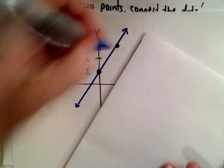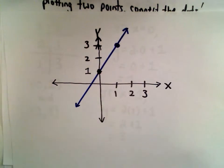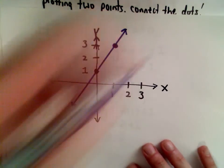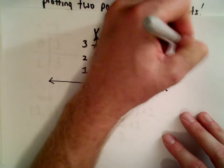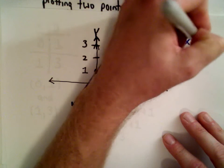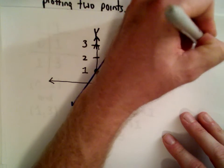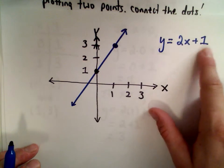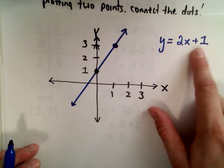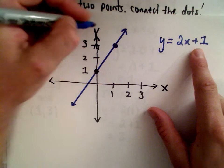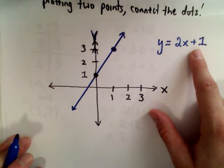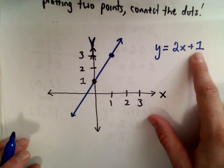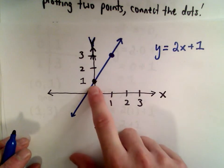Just to remind you about slope-intercept form that I mentioned at the beginning: the y-intercept is positive 1, and that's where the line crosses the y-axis at the value positive 1.